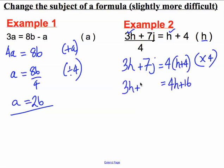So 3h plus 7j is equal to 4h plus 16. Now I've got 3h's on the left hand side and 4h's on the right hand side. I want h on its own. So why don't we subtract 3h from both sides and see what we get?